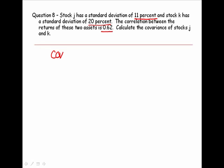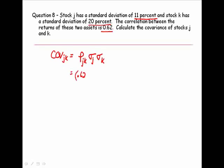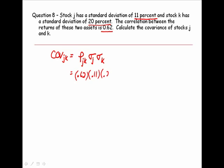The covariance of assets J and K is equal to the correlation between J and K times the product of their standard deviations, sigma J and sigma K. We were given a correlation coefficient of 0.62. The standard deviation of asset J is 11 percent, and the standard deviation of asset K is 20 percent.